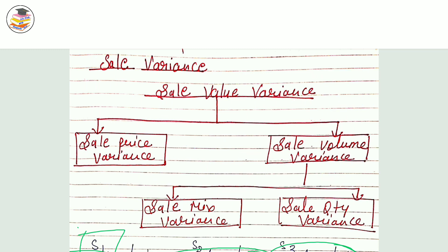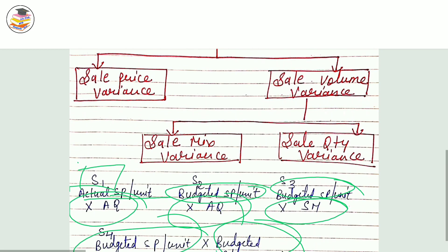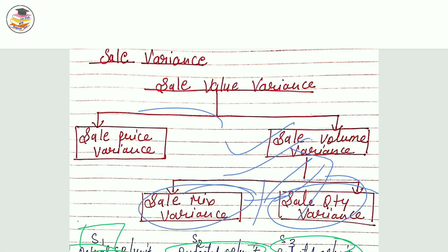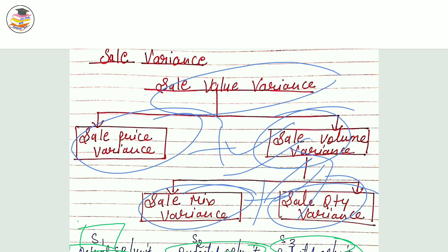So it is possible that your answer may not match the textbook, but you can check it yourself. To verify, the sum of the sub-variances should equal the sale value variance.